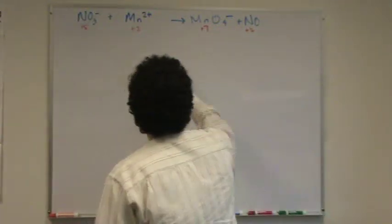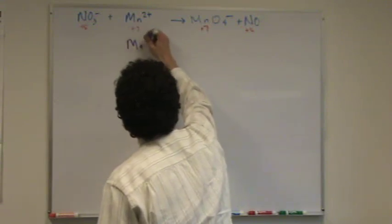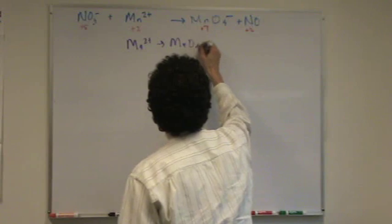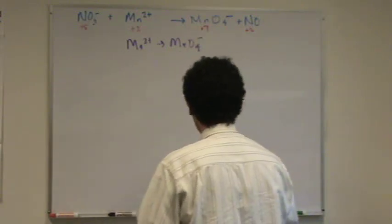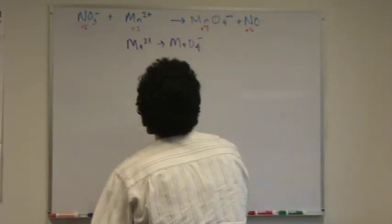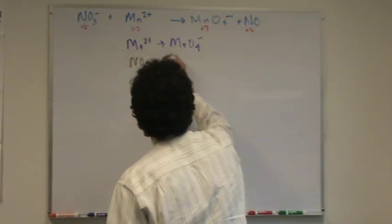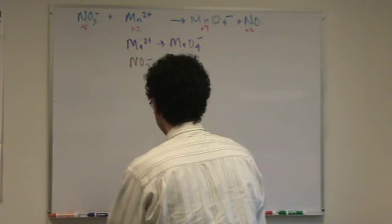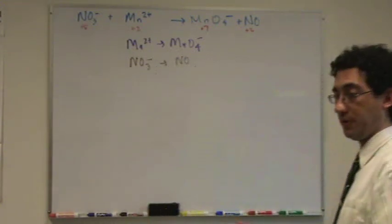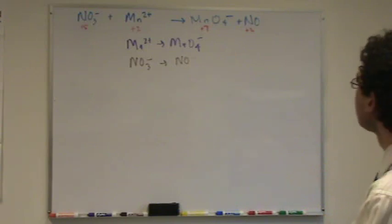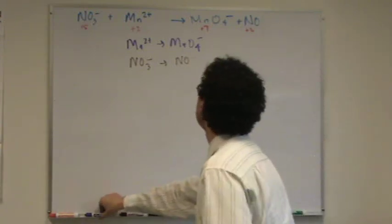Okay, so now let's write down. We got Mn2+ goes to MnO4-, and the other one is NO3- goes to NO. And by the way, we're going to go for both the acidic and basic answer. Alright, let's do the top one first.